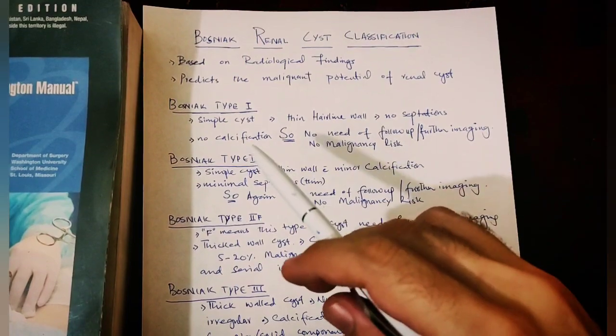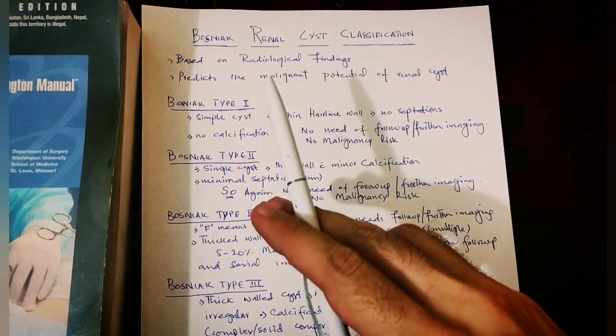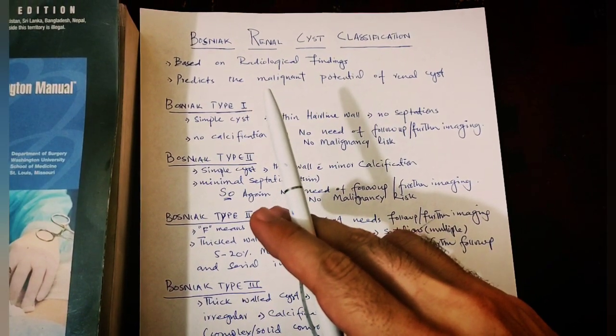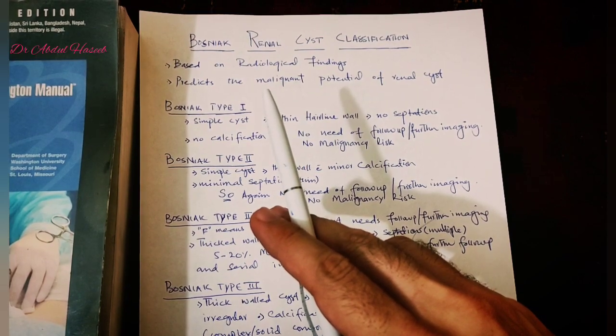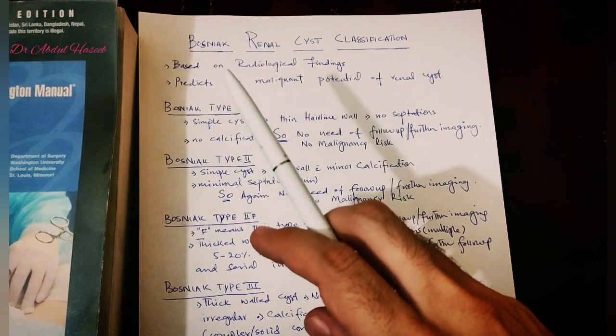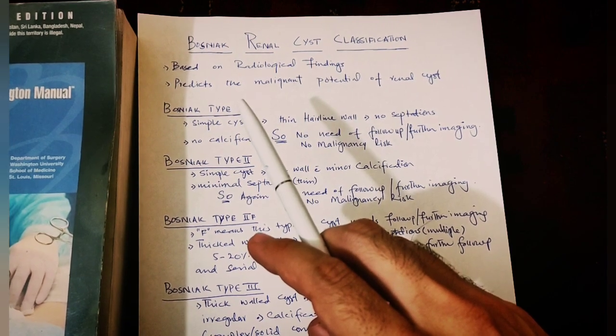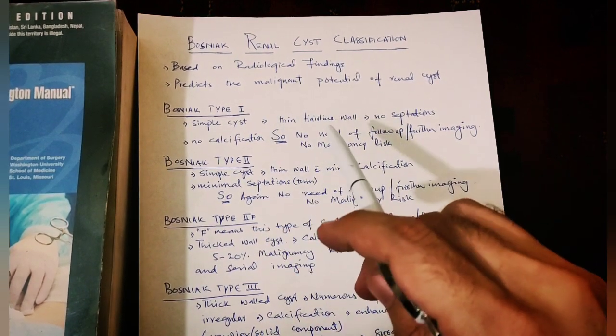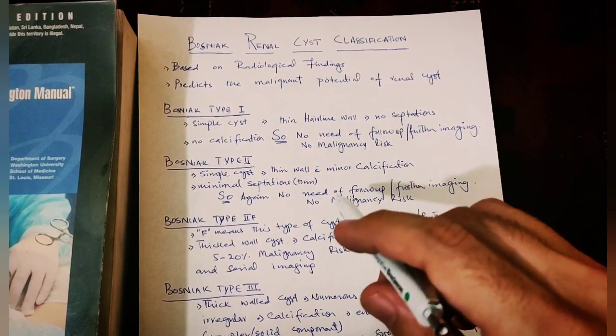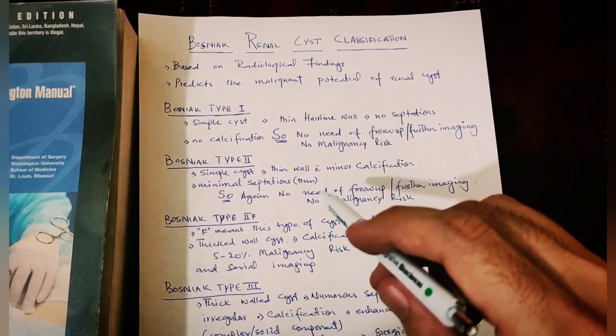Today I will be talking about the Bosniak renal cyst classification, which is basically a scoring system based on radiological findings that tells us the malignant potential of renal cyst. There are five types.